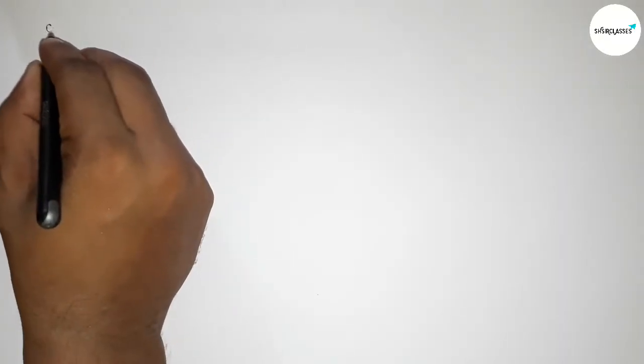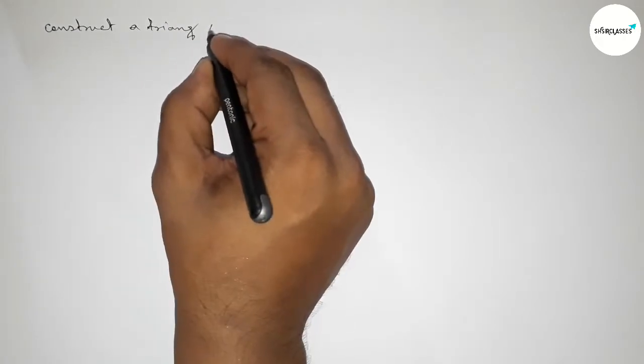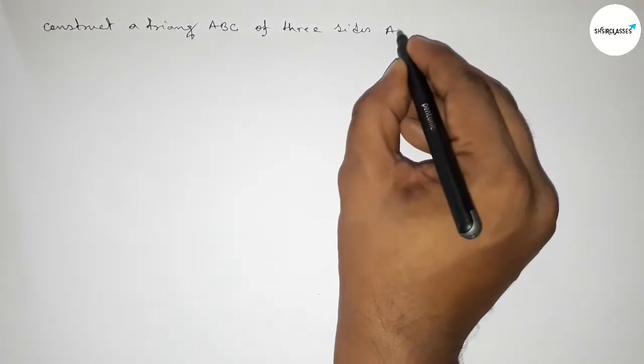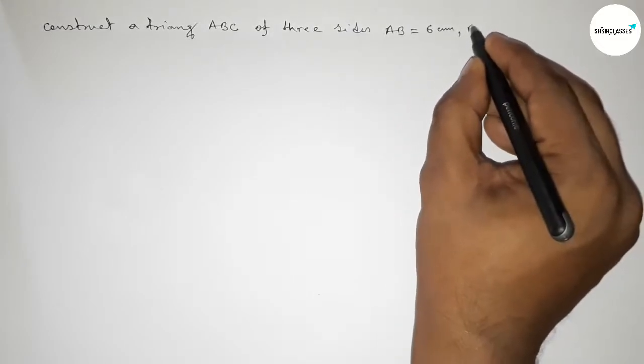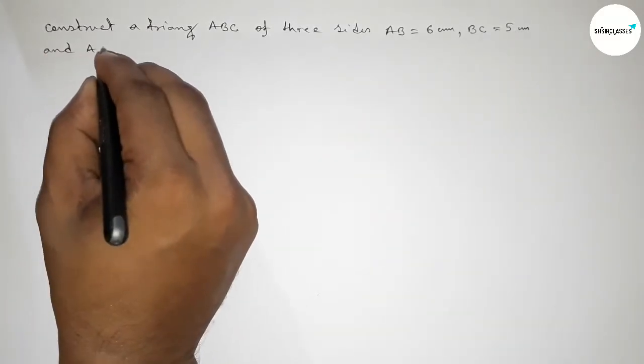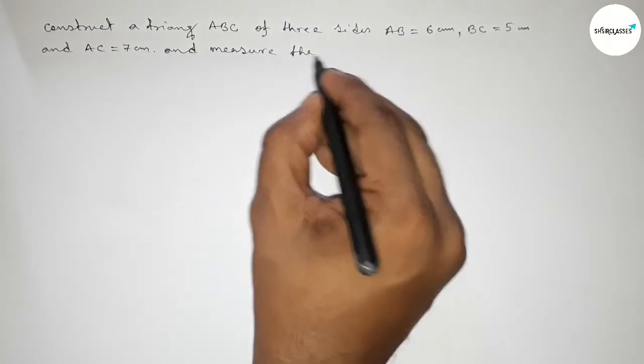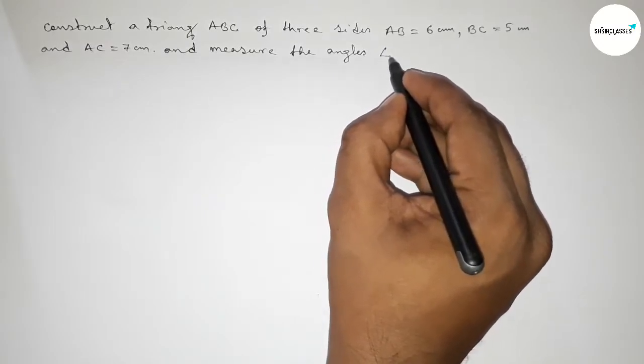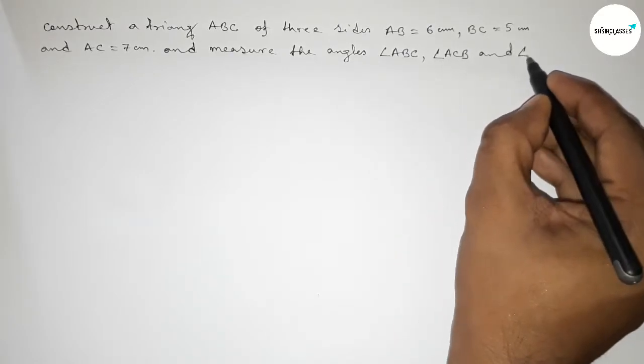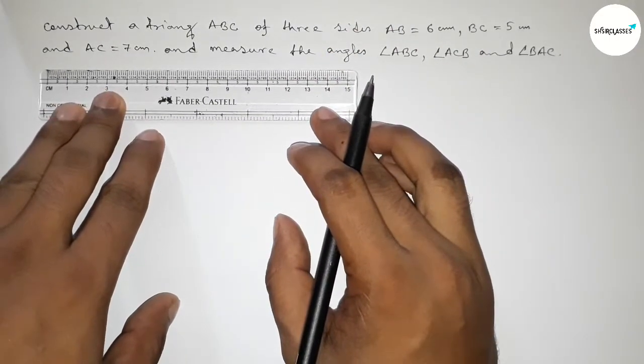Hi everyone, welcome to SIC Share Classes. Today we're discussing an important problem. We have to draw a triangle ABC with three given sides: AB equal to 6 centimeters, BC equal to 5 centimeters, and AC equal to 7 centimeters. And we have to measure the angles: angle ABC, angle ACB, and angle BAC.